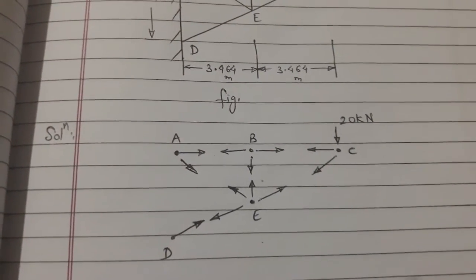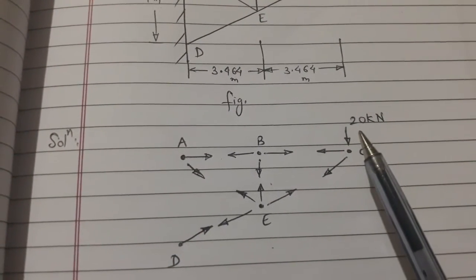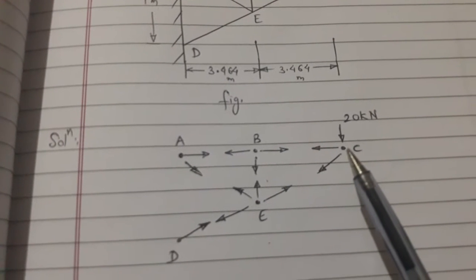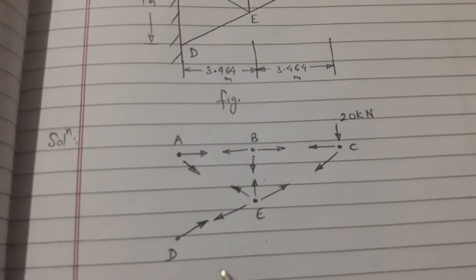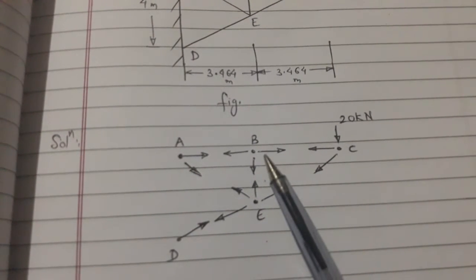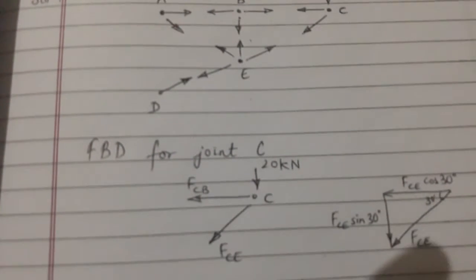The sign convention which we will be following is: if the force is downwards it will be negative, if the force is upwards it will be positive. If the force is towards the left side it will be negative, if the force is towards the right side it will be positive.